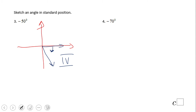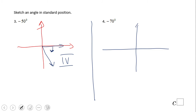So a negative 50-degree angle is in quadrant four. What about number four? Again, the initial side is here. 70 degrees — wait, that should be something like this — still in quadrant four.